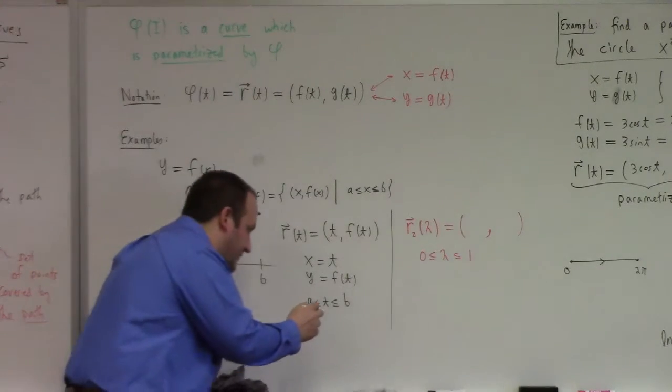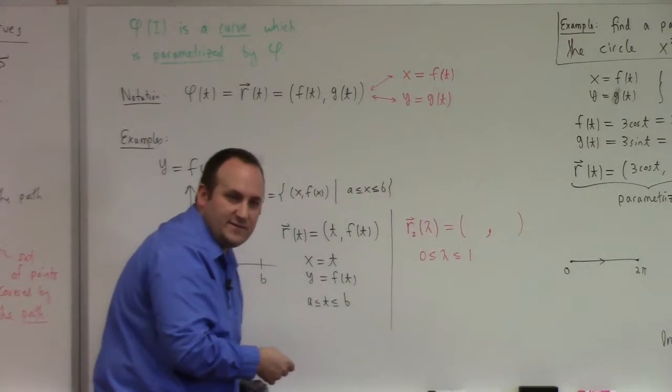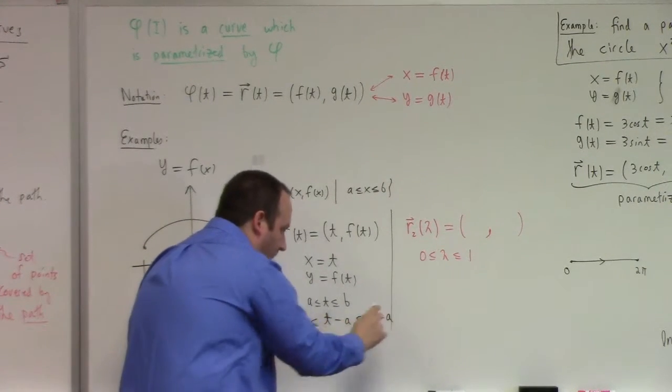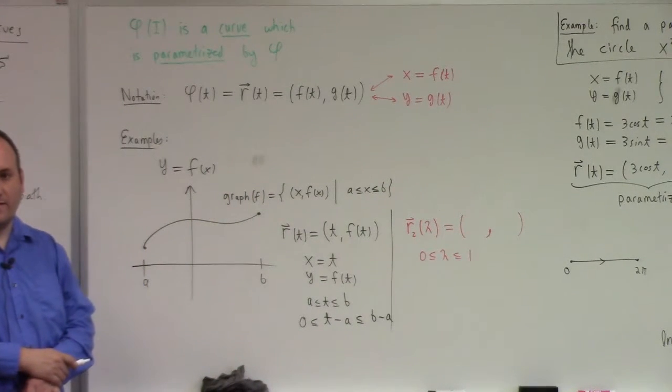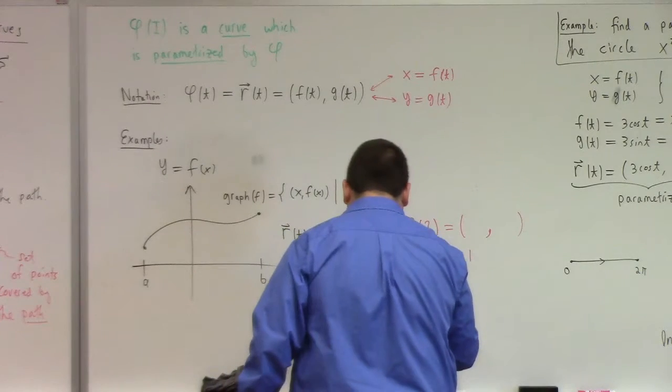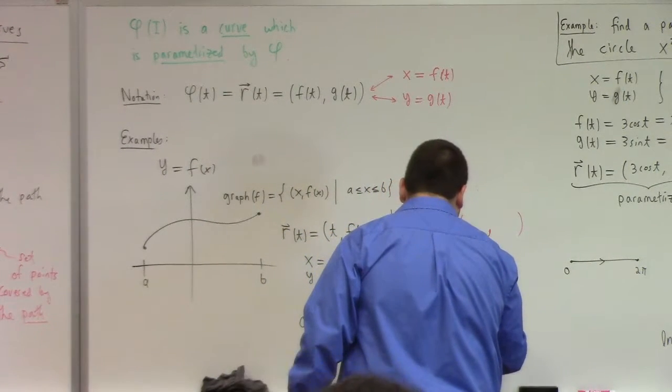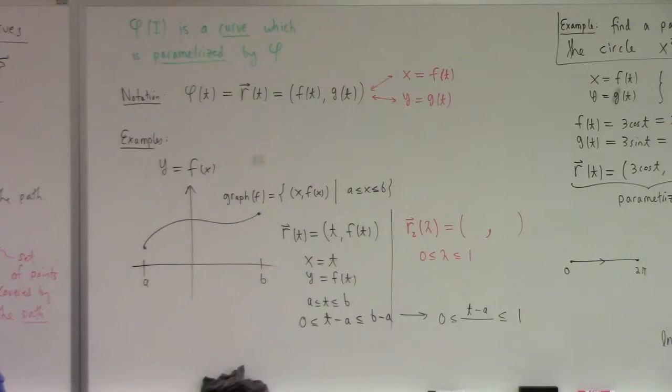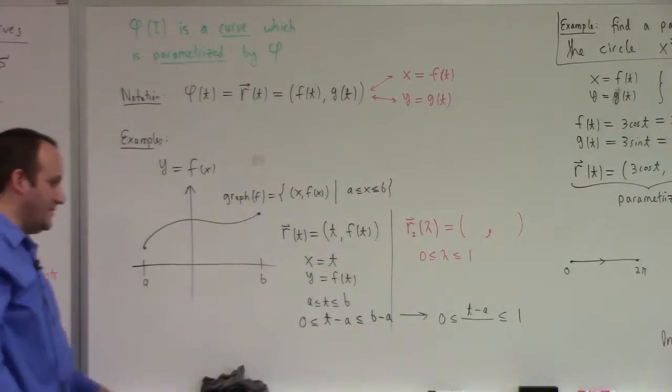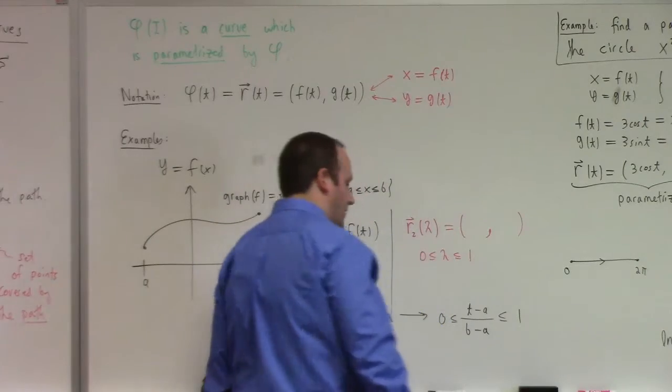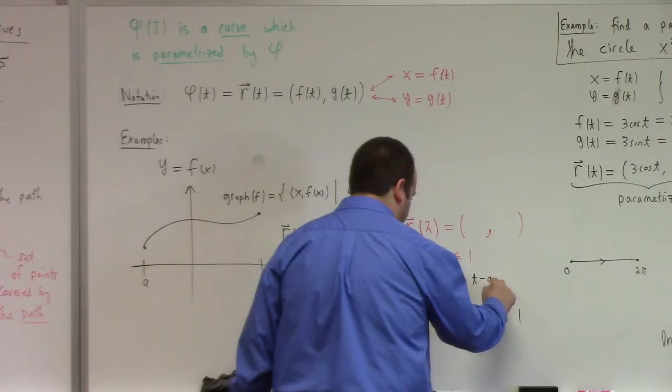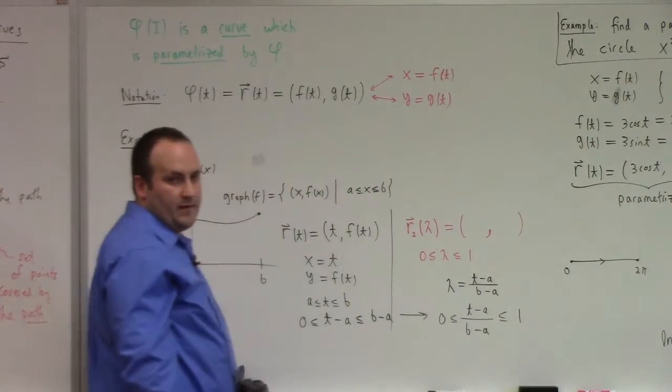So here's what I do. Here's how I think of it. I want to make a 0. Basically, I need to adjust the parameter. So if I subtract a from this, I get 0 less than or equal to t minus a less than or equal to b minus a. That's almost what I want in terms of the range for the parameter. How do I get that b minus a to become 1? Divide by b minus a. So this suggests that I should set lambda equals t minus a over b minus a.